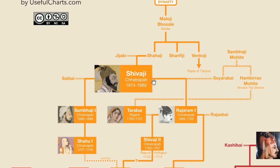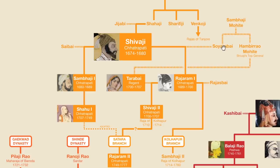Shivaji is credited as being the founder of the Maratha Empire, although the area controlled by the Marathas wouldn't really reach empire size until later. Today, he's revered by Hindu nationalists as one of their favorite heroes, and a statue of him is currently being built off the coast of Mumbai, which is set to become the largest statue in the world. Shivaji was succeeded by his son Sambhaji, but Sambhaji was eventually captured and killed by the Mughals. They also captured his son Shahu and held him prisoner. Therefore, another one of Shivaji's sons took over.